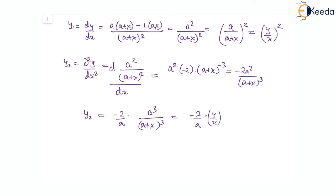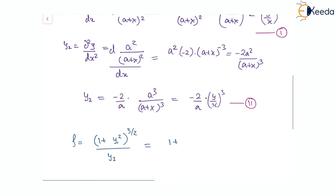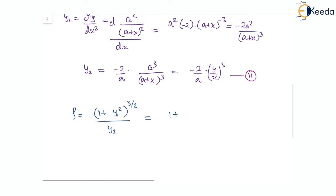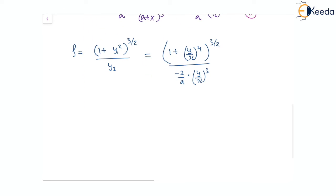Using these two results for y₁ and y₂ in the formula for rho — that is (1 + y₁²)^(3/2) / y₂ — we substitute: the numerator becomes (1 + (y/x)⁴)^(3/2), and the denominator is −(2/a)·(y/x)³. Taking the constant to the other side gives −2ρ/a = (1 + (y/x)⁴)^(3/2) / (y/x)³.